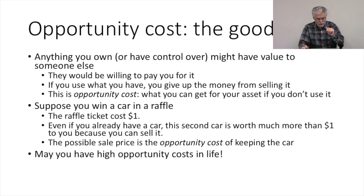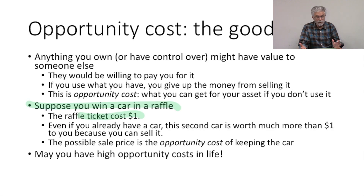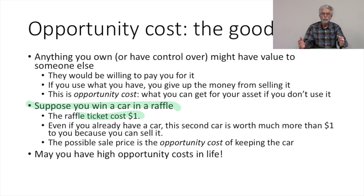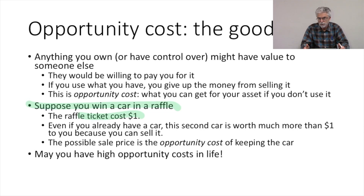Let's think about a quick example. Suppose you win a car in a raffle and the raffle ticket costs you a dollar. Even if you already have a car and don't really feel like you want to use this car you just won, the second car is worth a lot more than a dollar to you. What is it worth? Well, it's worth whatever you could sell it for. So you only paid a dollar to get this car, but it's worth much more than a dollar. The value is what you could sell it for. So the possible sale price of the car is the opportunity cost you face of using the car — it's what you give up if you decide to use something you own rather than sell it.